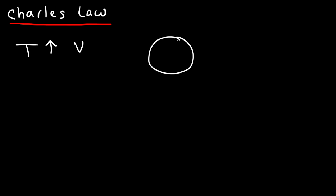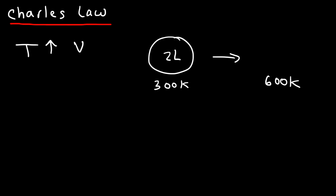Let's say you have a balloon at a temperature of 300 Kelvin and it's a 2-liter balloon. If you double the temperature to 600 Kelvin, what happens to the volume? Whenever you heat a gas at constant pressure the volume expands, so the balloon is going to be two times as large — it's going to be 4 liters.